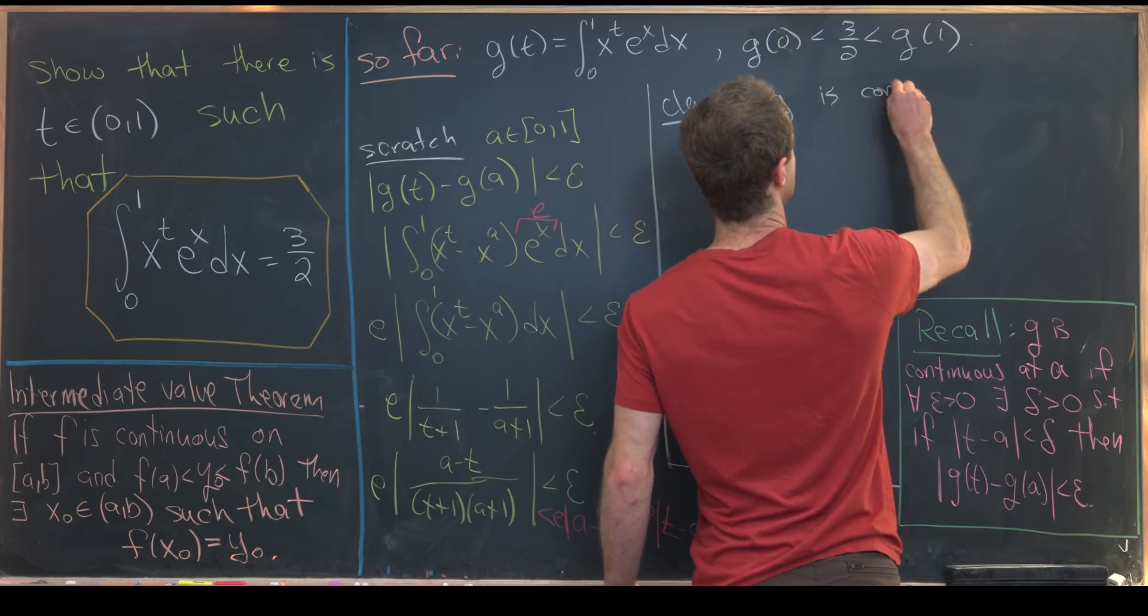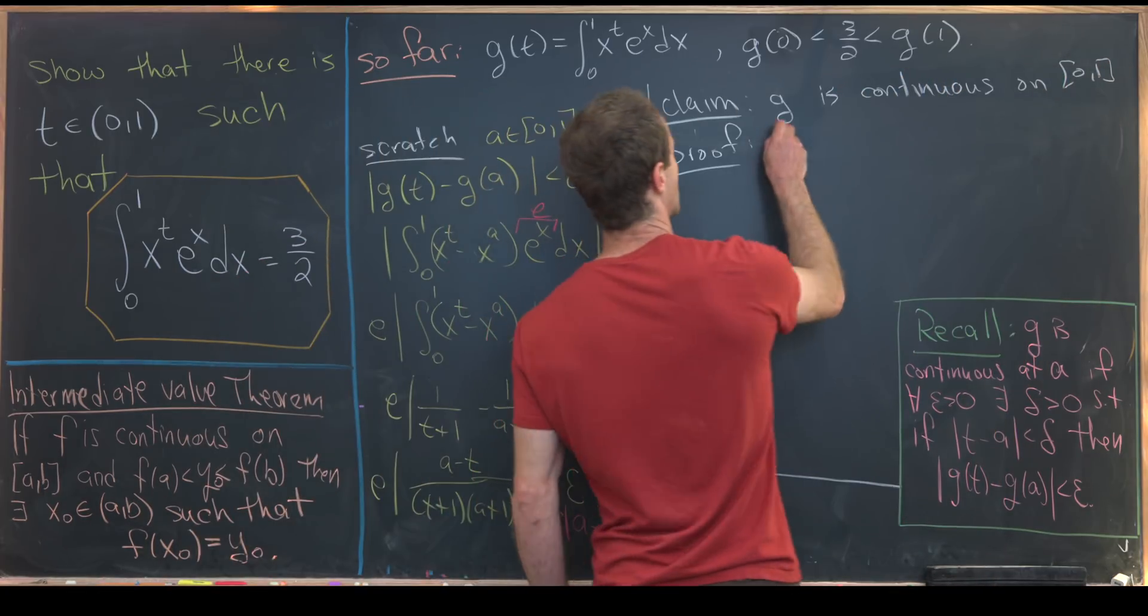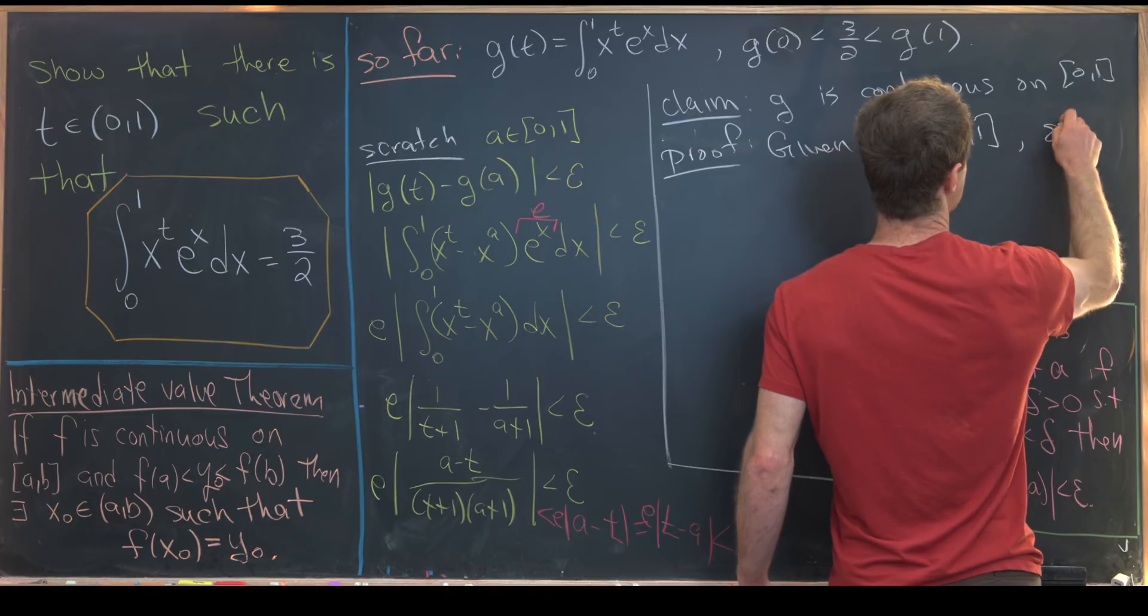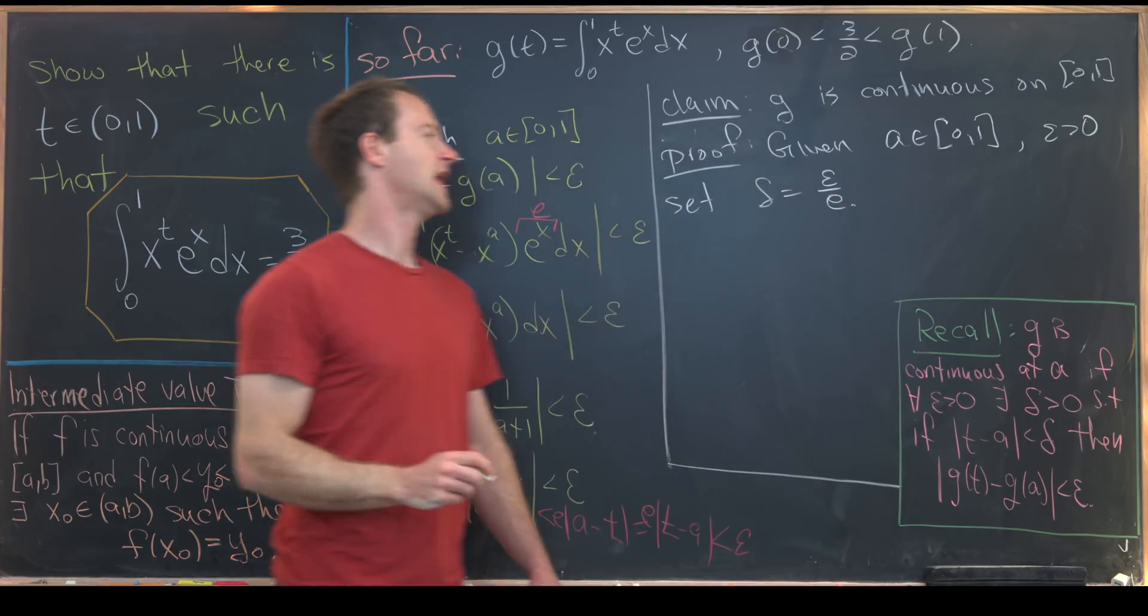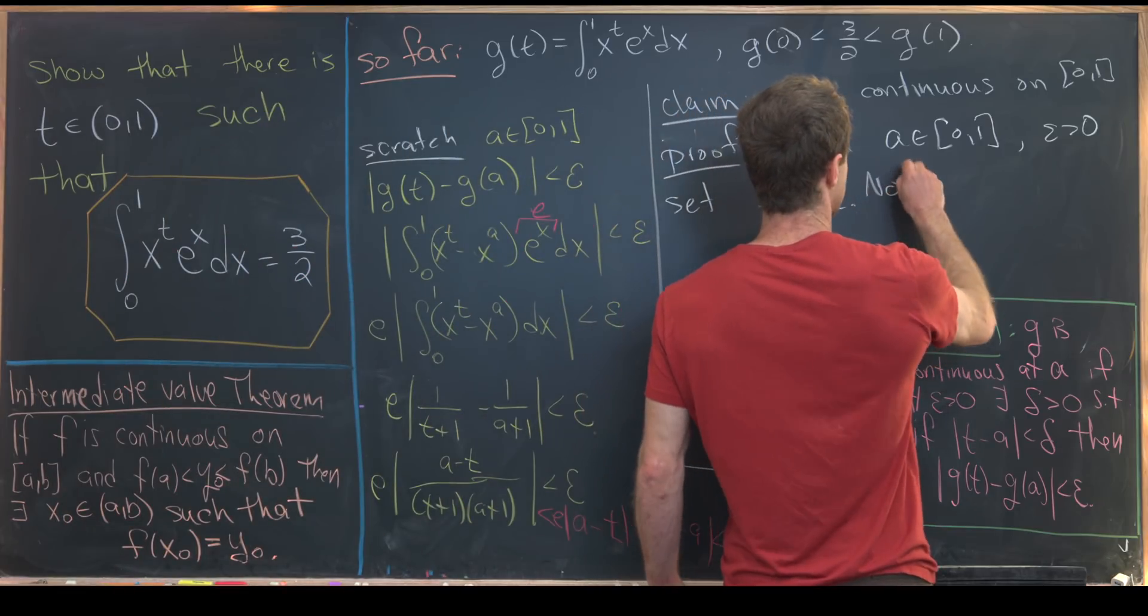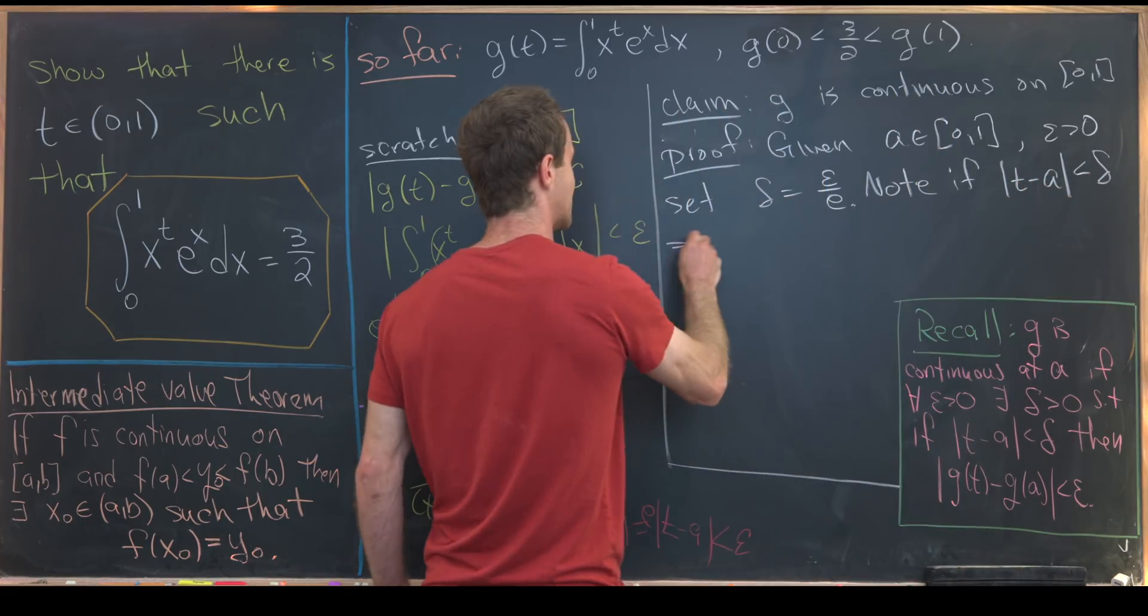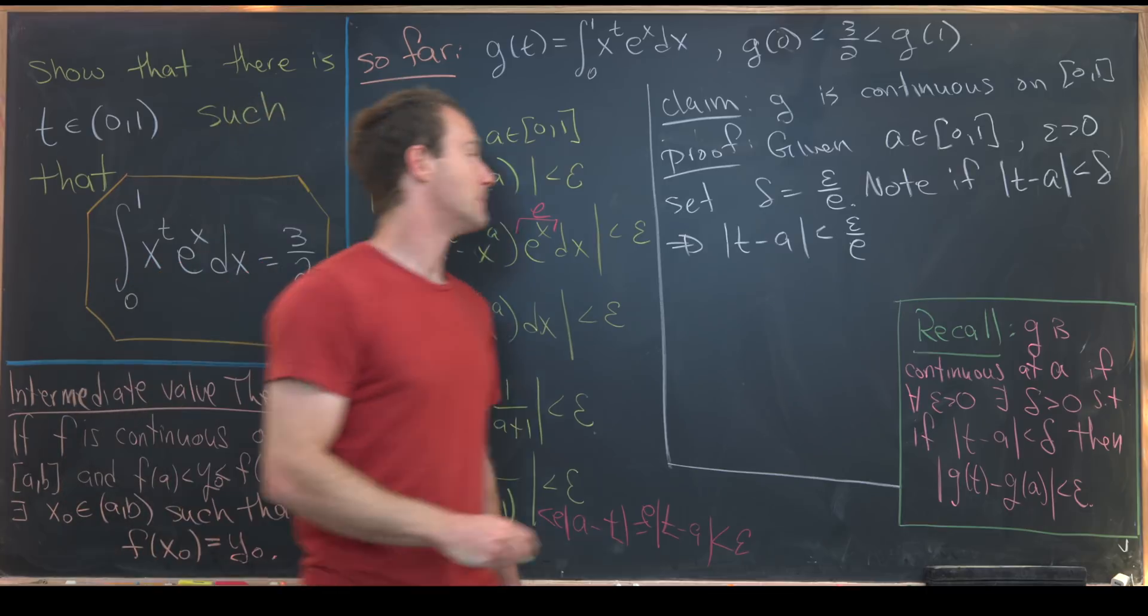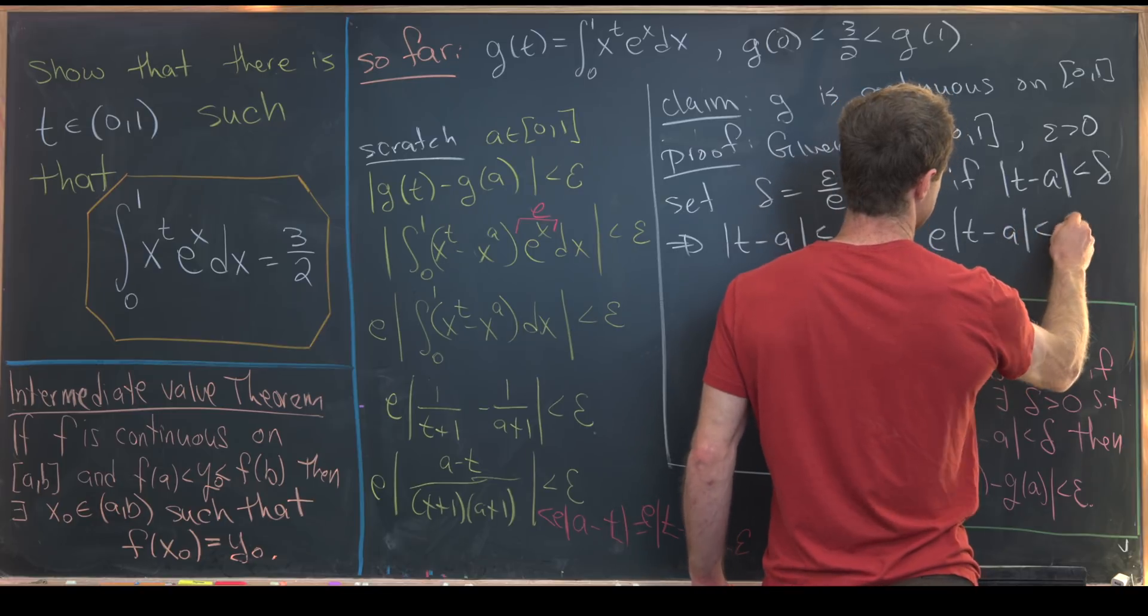G is continuous on the interval 0, 1. So let's say that we are given some arbitrary a on the interval 0, 1, and some epsilon bigger than 0, we can set delta equal to epsilon over e. And now we essentially do this calculation which was scratch work and reverse. So let's notice if the absolute value of t minus a is less than delta, well that's the same thing as saying that the absolute value of t minus a is less than epsilon over e. But then that's the same thing as saying e times the absolute value of t minus a is less than epsilon.